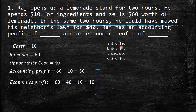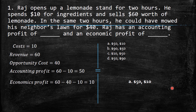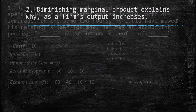Looking at the four options, the question is answered by: accounting profit of 50 and economic profit of 10.